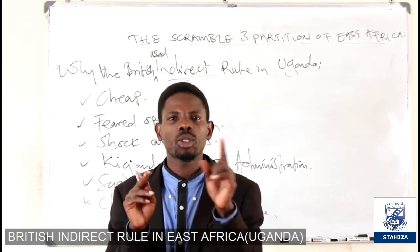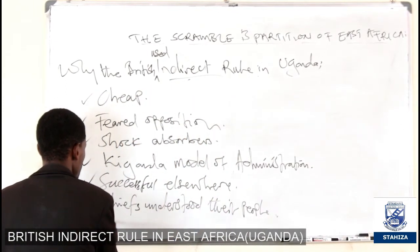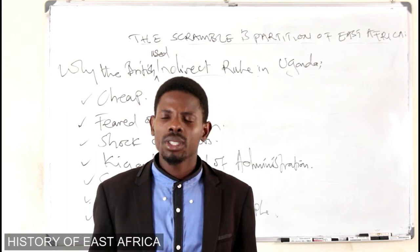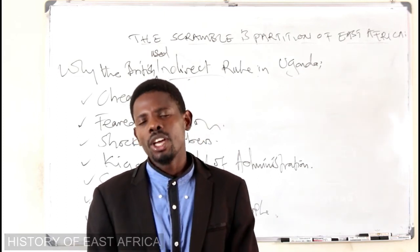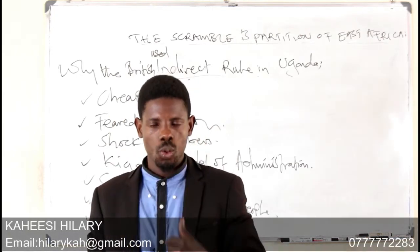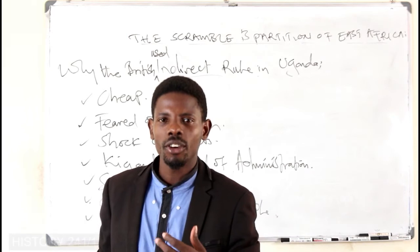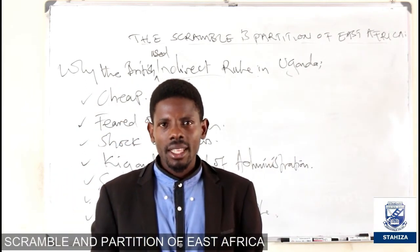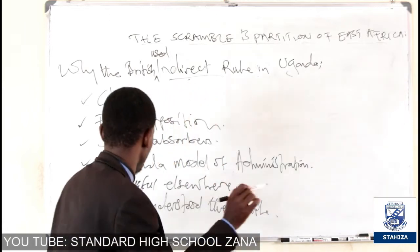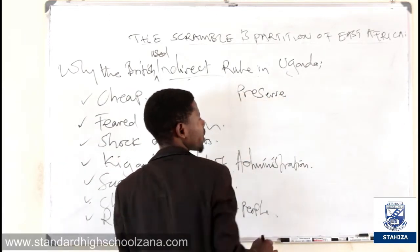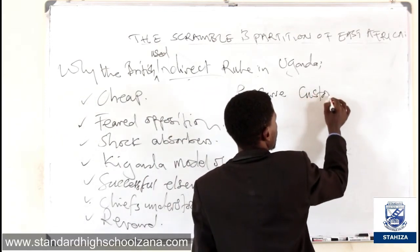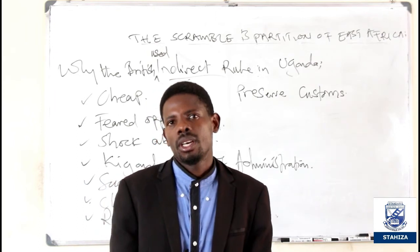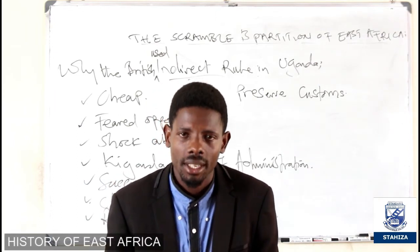Indirect rule was also used to reward societies that collaborated with the British, especially in Uganda. Kingdoms that worked with the British were rewarded — their leaders were recognized and given positions of authority as a vote of thanks for collaborating. The system also aimed to preserve and protect the customs, norms, traditions, social institutions, and political institutions that Africans had established before colonial rule.